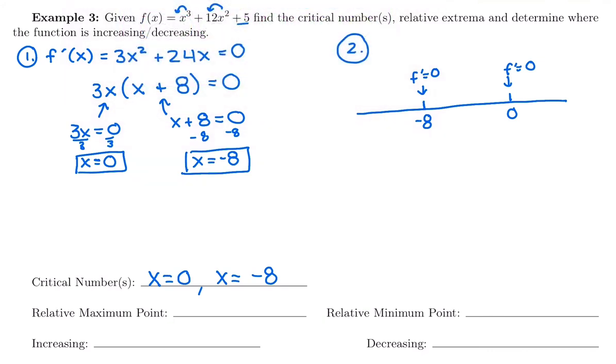So my first random test value, before negative 8, I could choose negative 10. Always plugging into the derivative, the sign of the first derivative tells you whether you're increasing or decreasing. You never plug into the original function on a sign chart. So we'd have 3 times negative 10, which would be a negative first factor. And our second factor would be negative 10 plus 8, which would stay negative. So 2 negatives multiply to be a positive. So we have a positive first derivative, which means the original function is increasing.